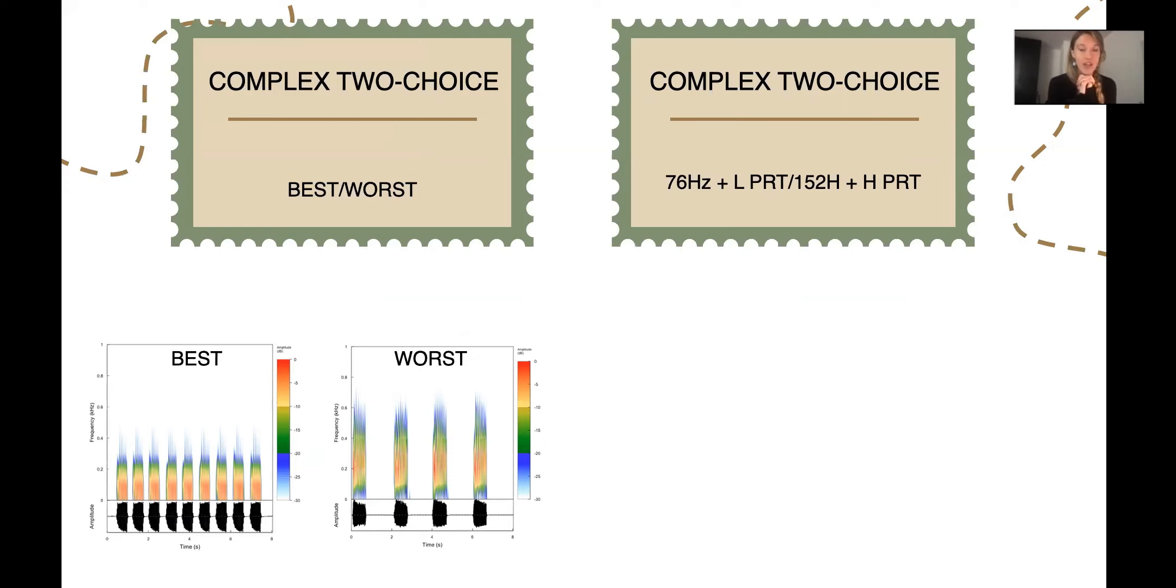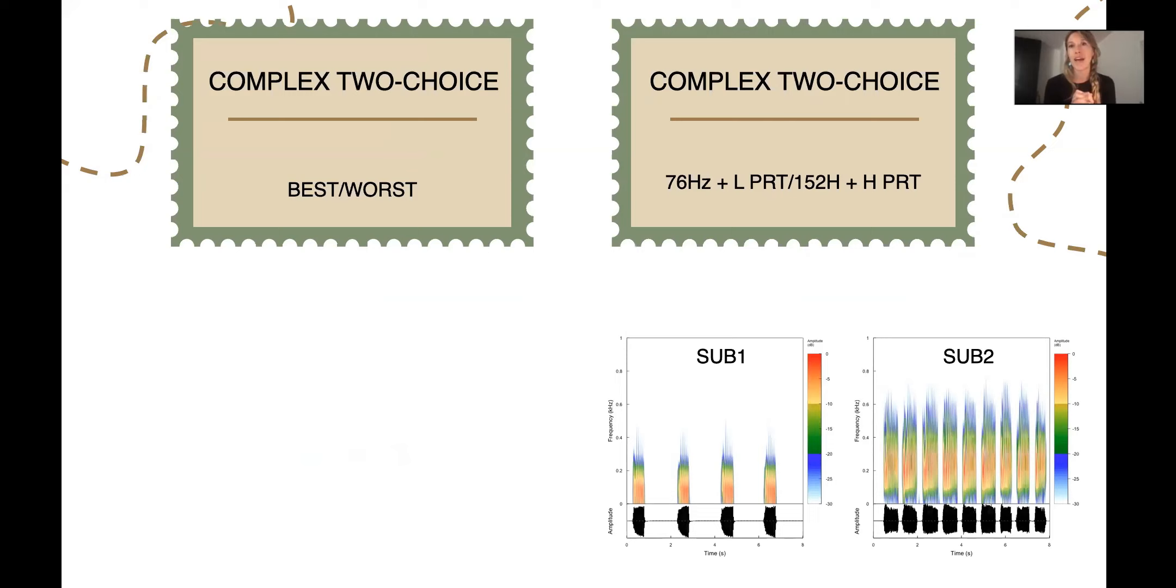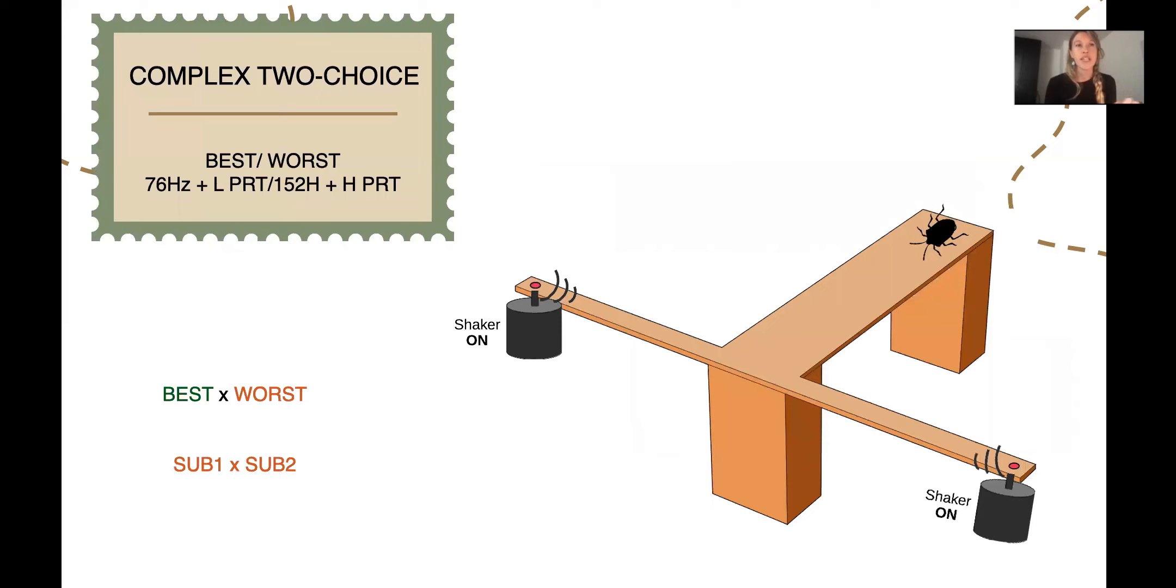For last, we decided to make the insects crazy and combine different parameters from our best choice and our worst choice. We took one of the best parameters, which was the low dominant frequency, in sub one and put it together with a low pulse rate. We were combining the frequency that they preferred with the pulse repetition that they didn't prefer. On sub two, we did the opposite. We gave the insects the higher dominant frequency but a high repetition pulse.